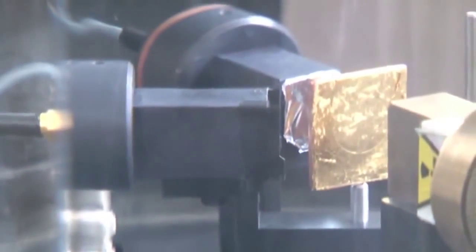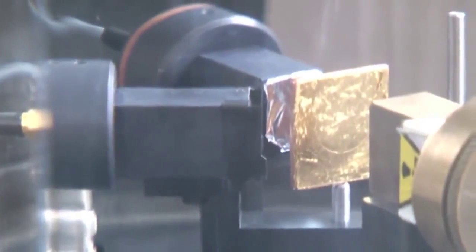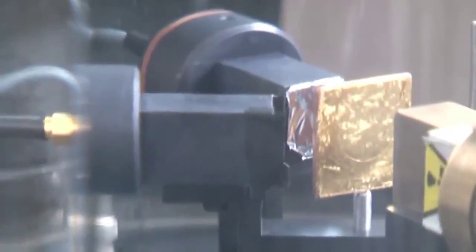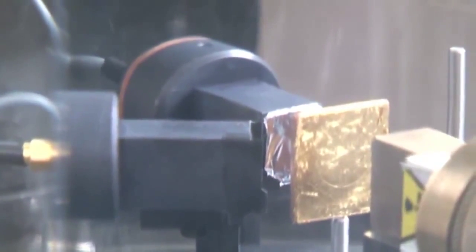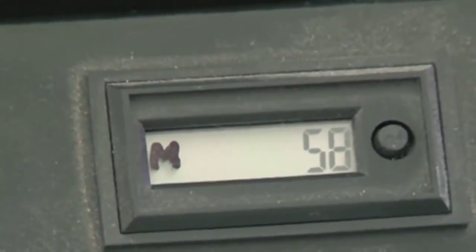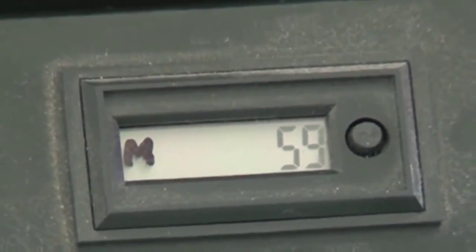In its current position behind the foil it will measure one count every few seconds. As Rutherford deduced, most of the gold atom is empty space, so the alpha particle just goes straight through, doesn't see anything, and goes through in a straight line.